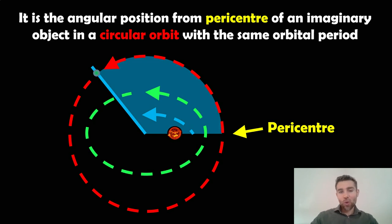So what we've got here, we've got the pericentre again which is on the right hand side, and it's past the pericentre. So the mean anomaly is essentially the angular position from that pericentre of an imaginary object. So it's not the actual object that's orbiting. It's an imaginary object on a circular orbit that has the same orbital period as your object that has an elliptical one.